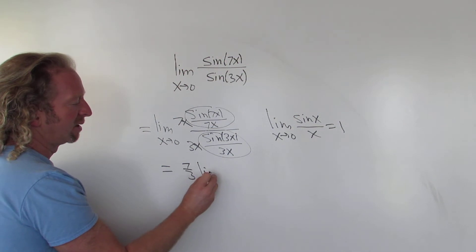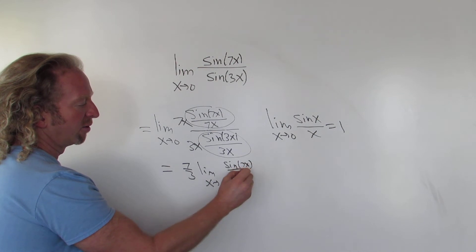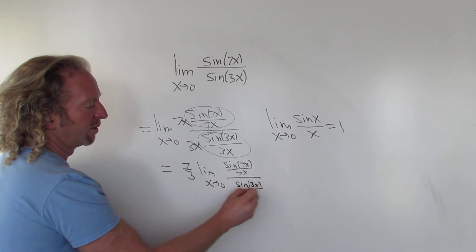So you get limit as x approaches 0. If you want to show more work, you write it again: sine 7x over 7x over sine 3x over 3x.